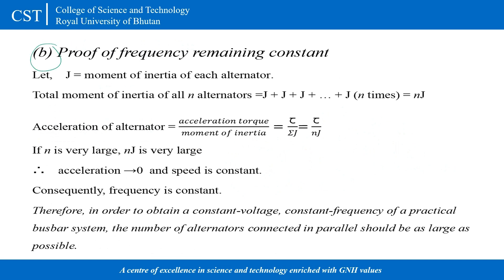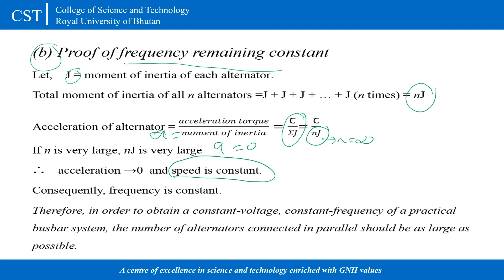This is proof that frequency remains constant. Let J be the moment of inertia of one alternator. With N number of generators, the total moment of inertia is N times J. The acceleration equals torque divided by the total moment of inertia, which is N times J. When N tends to a large value or infinity, the acceleration tends to zero. When acceleration tends to zero, the speed remains constant, and when speed is constant, the frequency is constant. Therefore, the frequency in this infinite bus remains constant throughout.